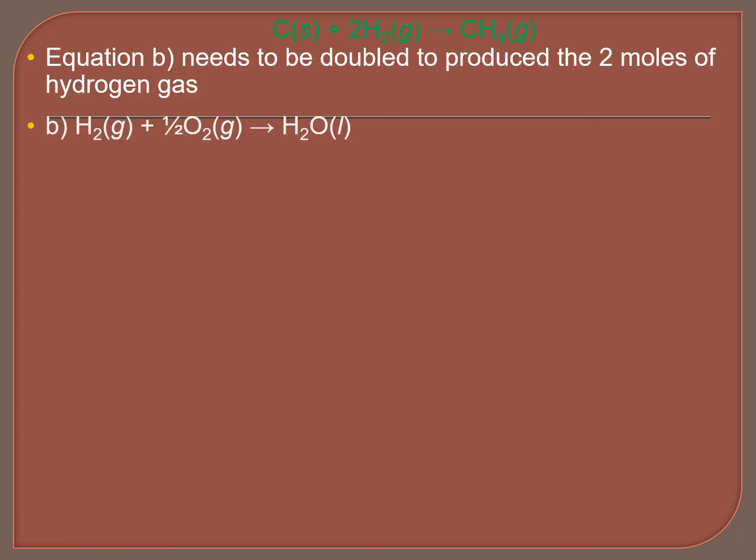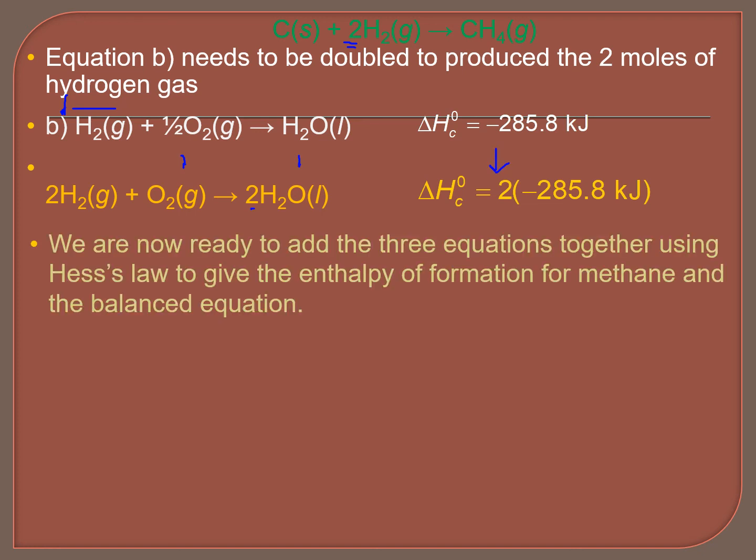So now we're going to deal with the second equation, equation B. If you'll notice with equation B, we need to end up with two moles of hydrogen. But here we only have one mole. So we're going to double the entire equation B. So there is everything doubled. Everything's multiplied by two. And we have also multiplied our enthalpy change by two here. So at this point, we can now rewrite our equations.